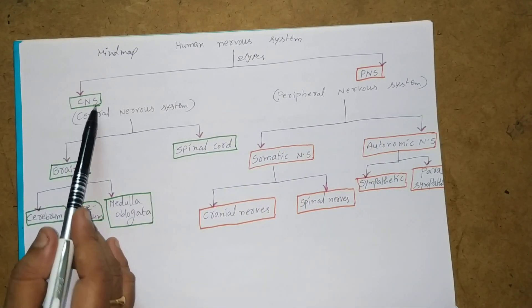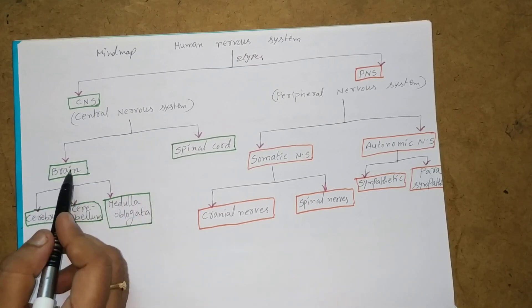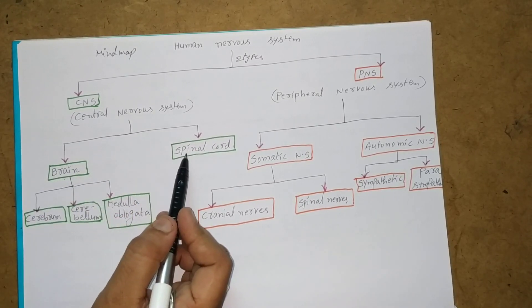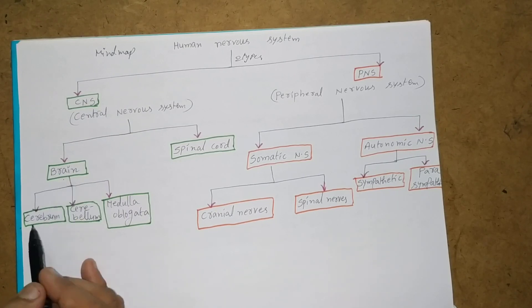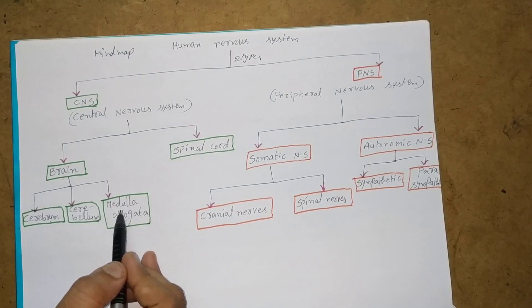Central Nervous System consists of mainly two parts: Brain and Spinal Cord. Brain has three parts: Cerebrum, Cerebellum, and Medulla Oblongata.